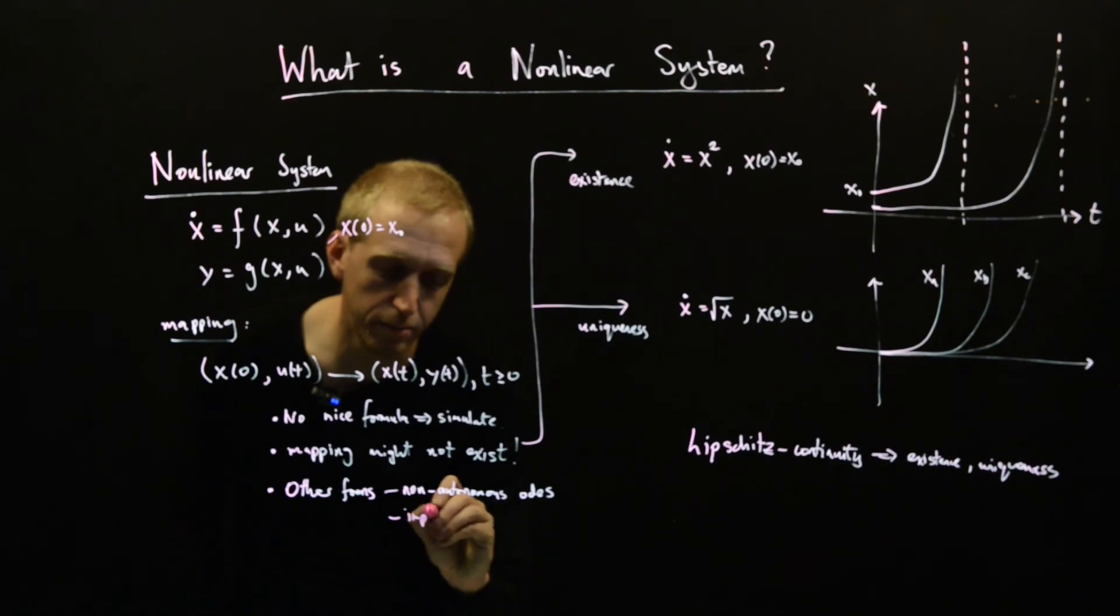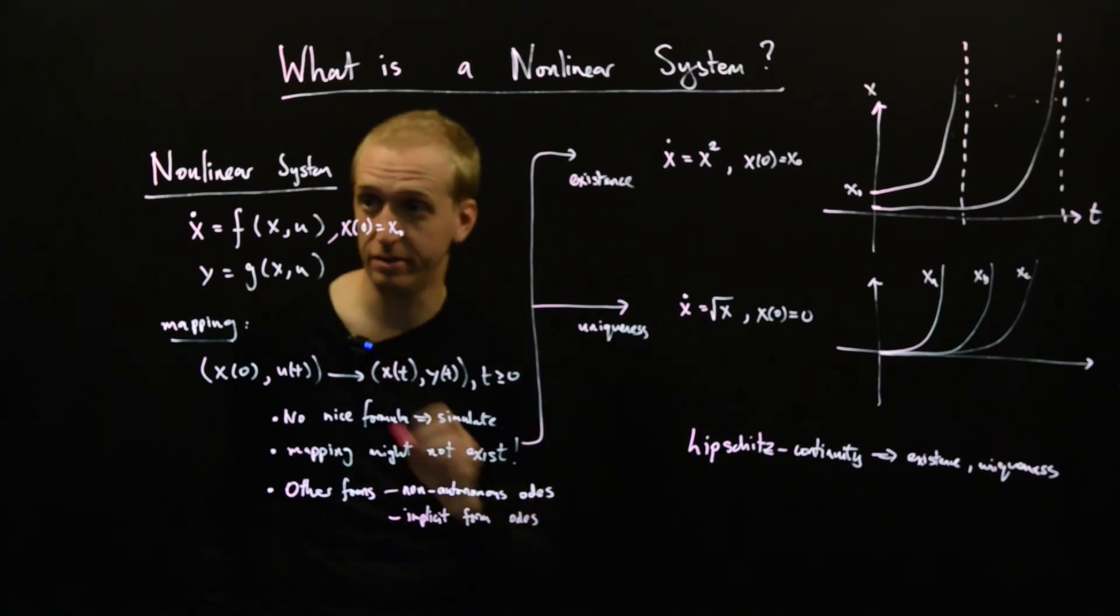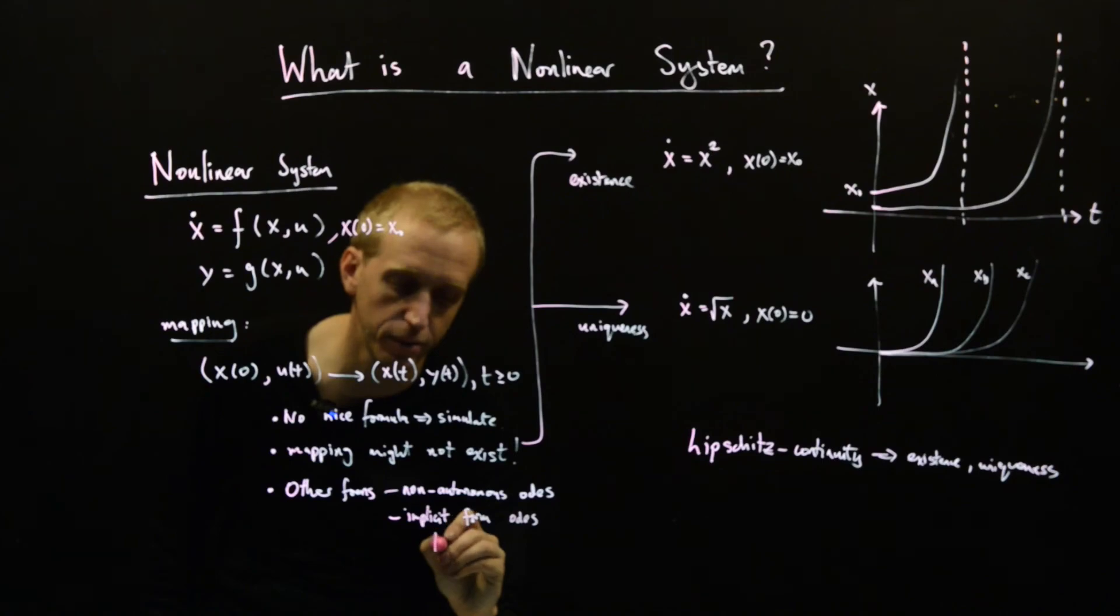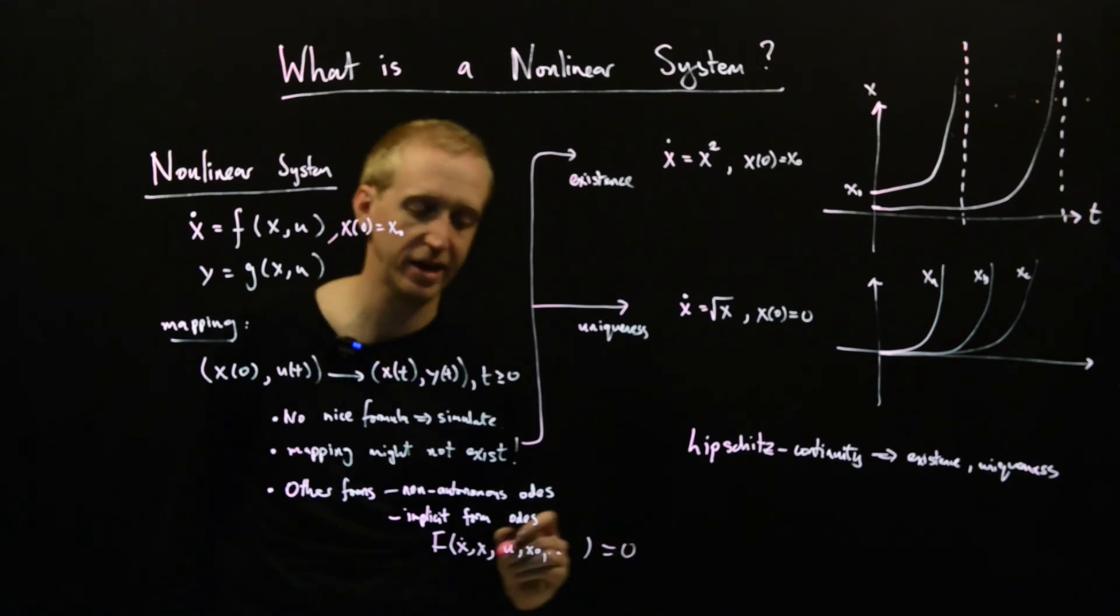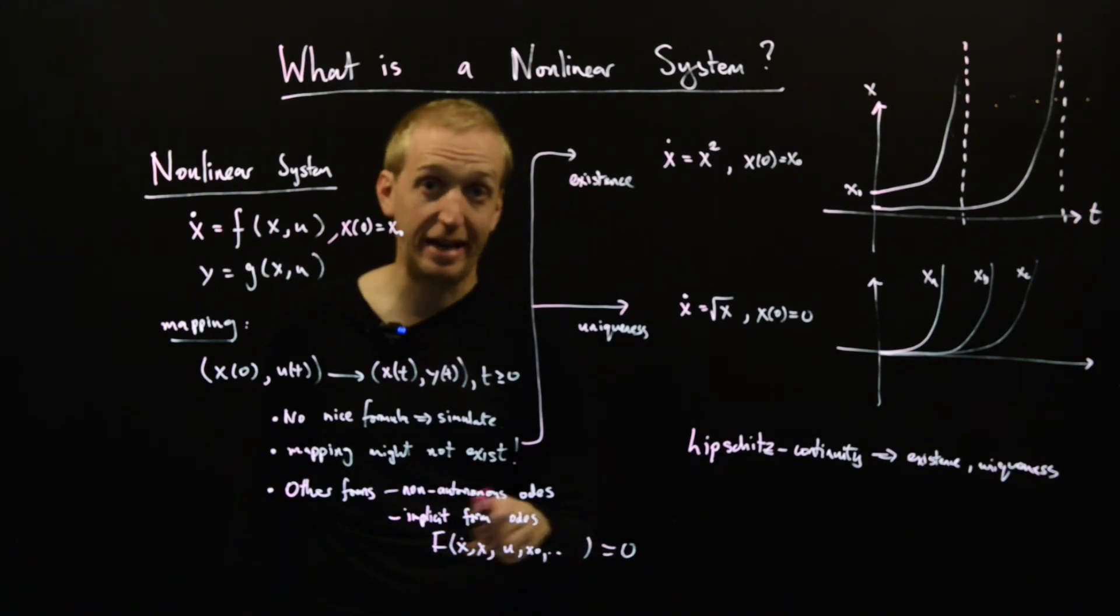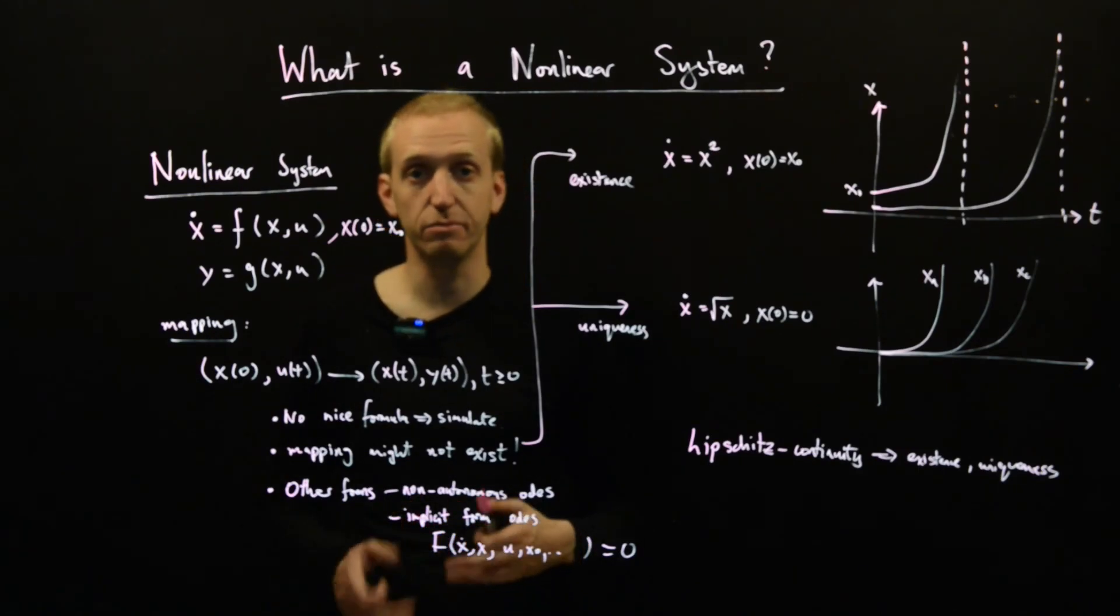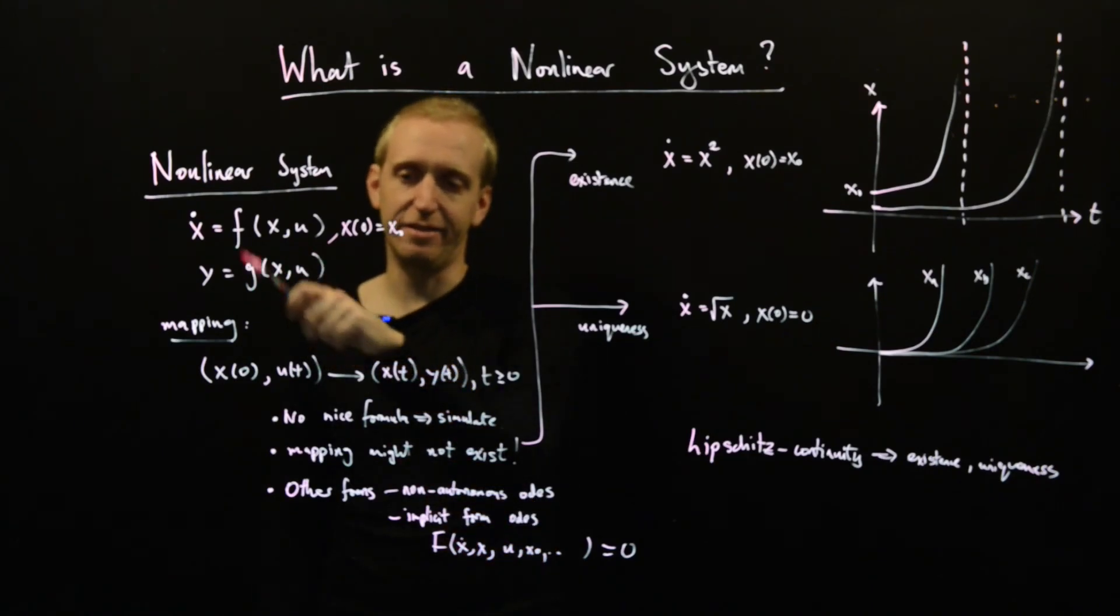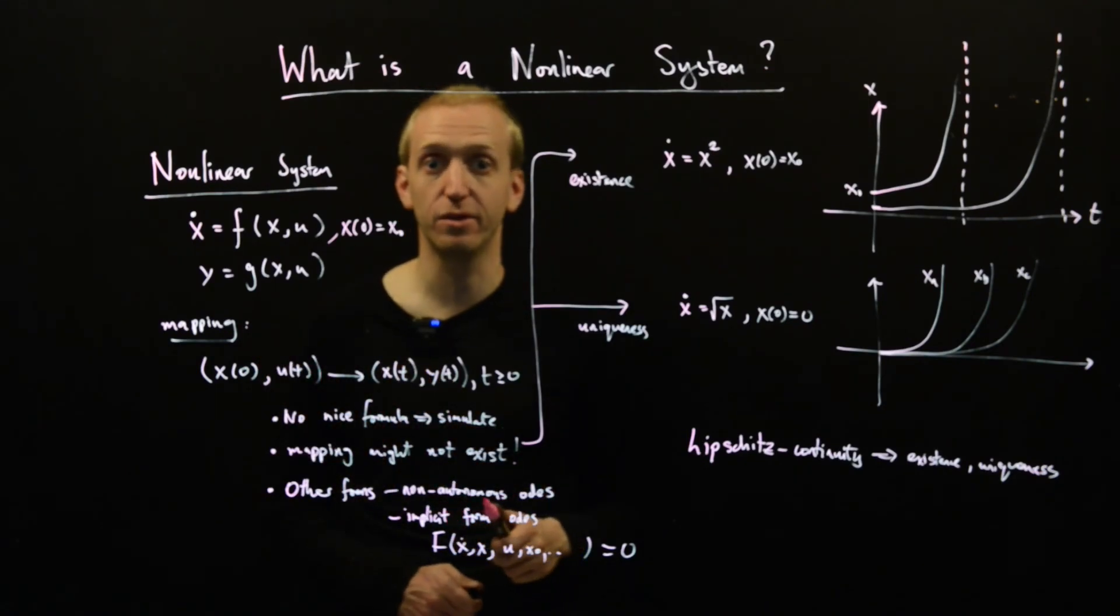And this is we replace this equation here by something more general - F of, it's a function of x dot, x, u, x0, and you can keep bunging more stuff into the brackets. And instead of requiring the function to have a particular form up here, you can gain a slight bit of extra generality by allowing the function to also act on x dot. And this is quite natural when you study mechanical systems, but this will be more than enough to start exploring all of these interesting nonlinear behaviors. So we're just going to stick with this for the rest of the course unless we say otherwise.